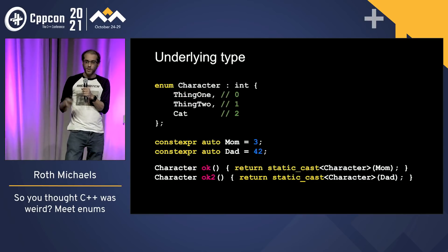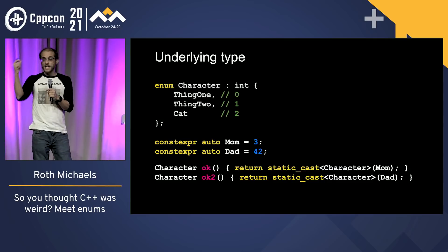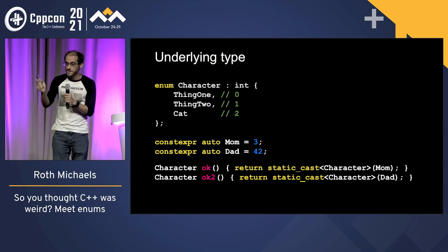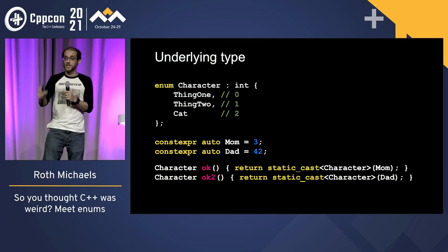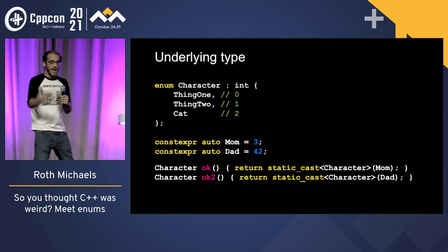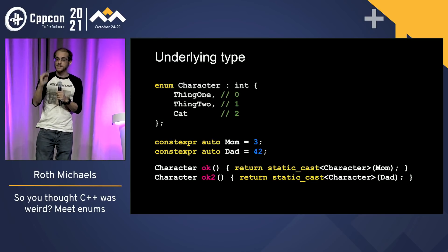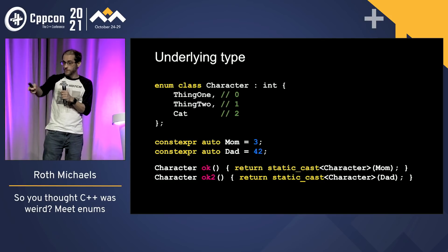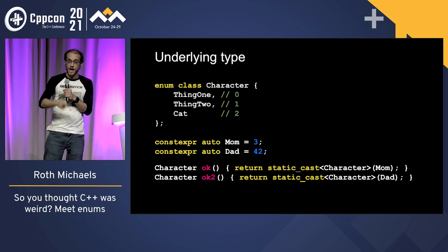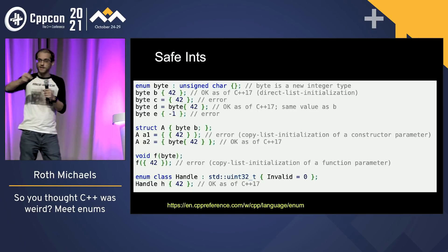To get more interesting: if you declare explicit storage for the enum as int, now it can hold any int value. Casting 'dad' as 42 is fine — it can hold any value an int can hold. So even though your switch only covers cat, thing_one, and thing_two, any int value is legitimate and can actually exist in that enum. This is also true for enum class declared as int, which is exactly the same as not declaring storage. Basically, enums are not a closed set of values.